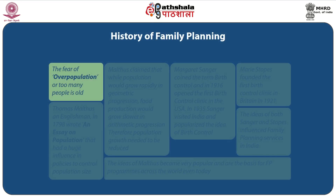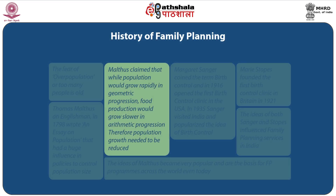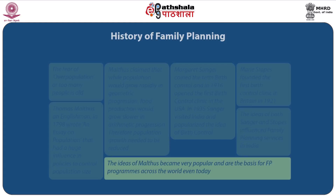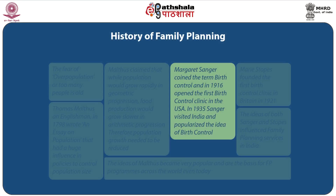The fear of overpopulation or too many people is old. Thomas Malthus, an Englishman in 1798, wrote an essay on population that had a huge influence on policies to control population size. Malthus claimed that while population would grow rapidly in geometric progression, food production would grow slower in arithmetic progression. The ideas of Malthus became very popular and are the basis for family planning programs across the world even today. Margaret Sanger coined the term birth control and in 1916 opened the first birth control clinic in the United States of America. In 1935, Margaret Sanger visited India and popularized the idea of birth control.